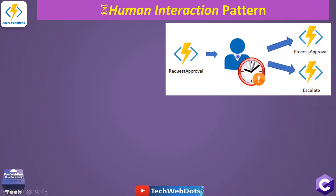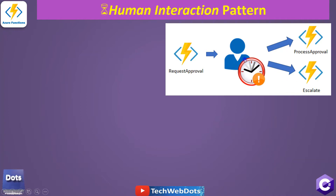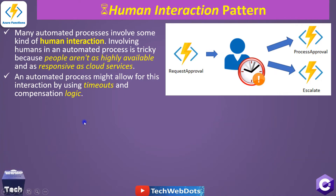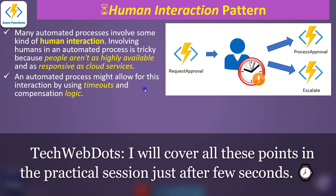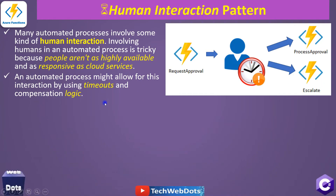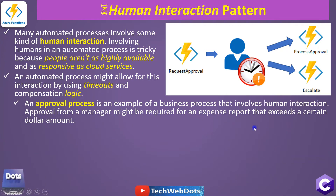According to this picture given by Microsoft, we are requesting for approval and there is some human interaction required. If after waiting for a certain time there is no response, we can escalate. If we receive a response, we can process another function. By definition from Microsoft, any automated process involving humans is tricky because people are not as highly available or responsive as cloud services. An automated process might allow for this interaction by using timeouts and compensation logic.